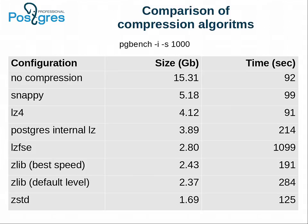We also compared various compression algorithms on the same dataset. You can see the results on the slide. Notably, Postgres's internal compression algorithm is a bit outdated, so it can be improved. While it's easy to make compression algorithms pluggable and give the user a choice, for the first release we chose to use only the zstd algorithm as the default, as it provides the best compression ratio and acceptable speed.